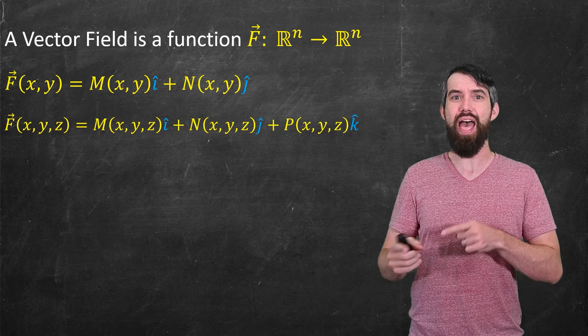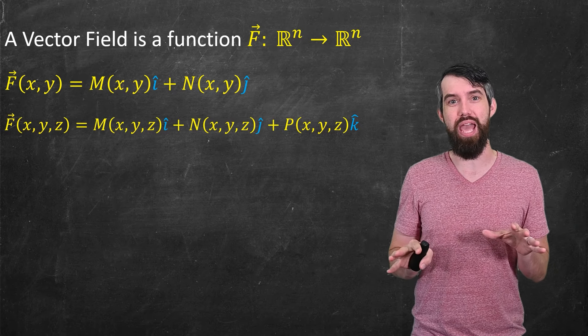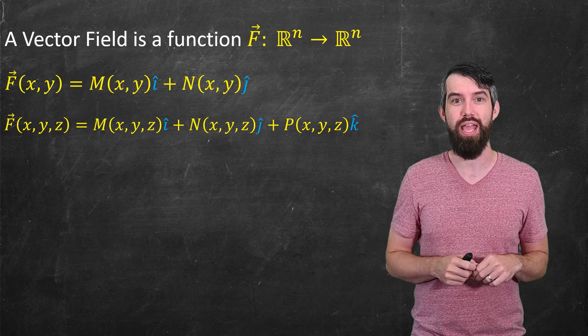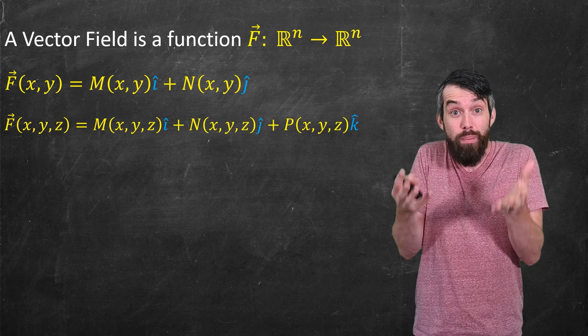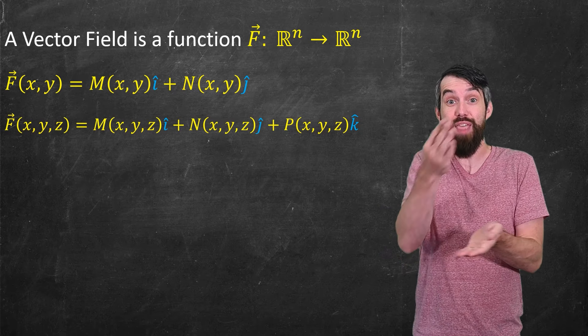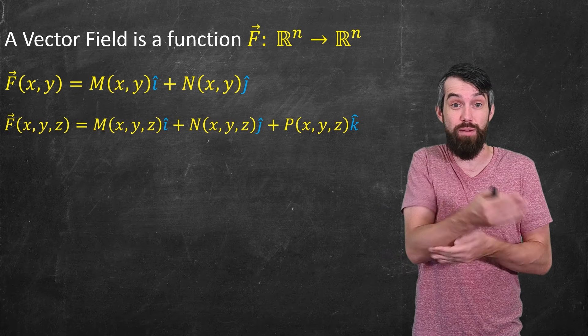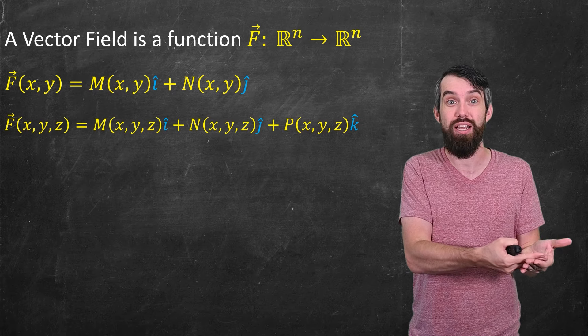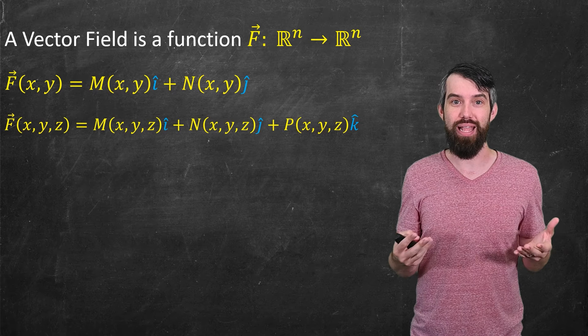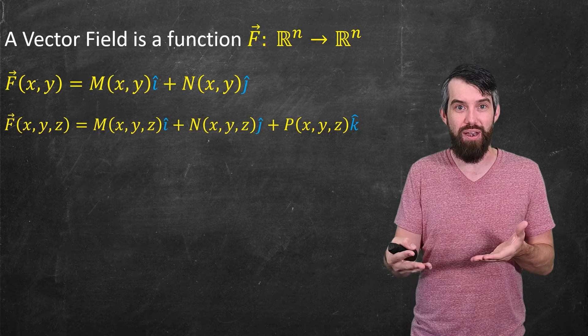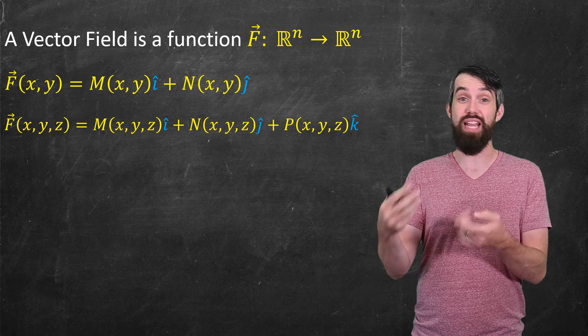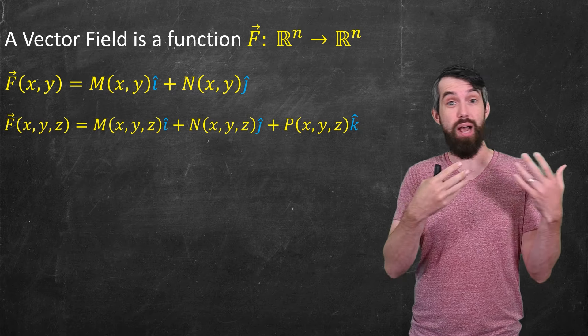So for example, in that plot of wind speed that we had before, that was a two-dimensional plot. And at every location in the xy-plane, there was a two-dimensional vector, and that vector told you the wind speed at a particular point. Wind speed is both a direction and a magnitude. Nevertheless, you could encode that with these functions M and N. And then a lot of the standard terminology from calculus just comes along with these functions.